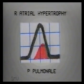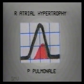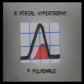In right atrial hypertrophy, the initial component is prominent, so the P wave is tall and peaked in lead 2, taller than 2.5 small squares. Since this is common with pulmonary hypertension, it is termed P pulmonale.